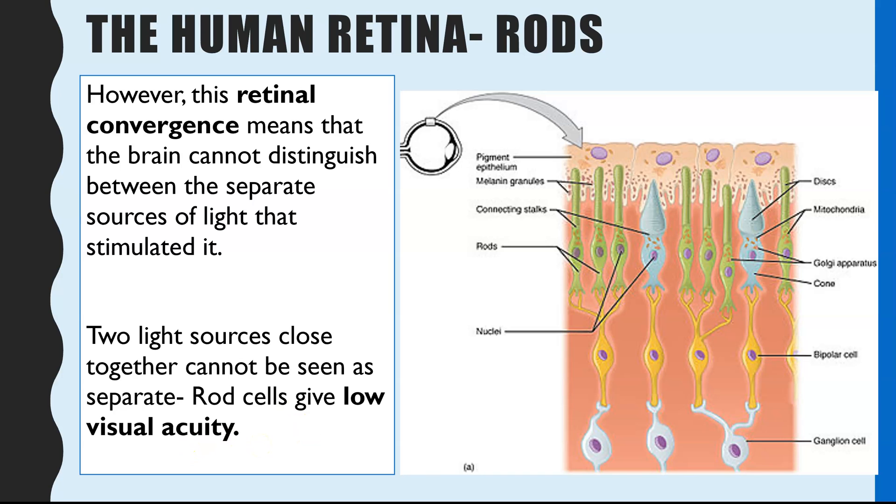And you might have noticed this, if you've ever had to get up in the night for whatever reason, or you've been walking in the dark, you first of all will probably have noticed you only have black and white vision. But secondly, you might bump into objects, you can't quite see everything clearly. And that is because of this retinal convergence, resulting in low visual acuity.